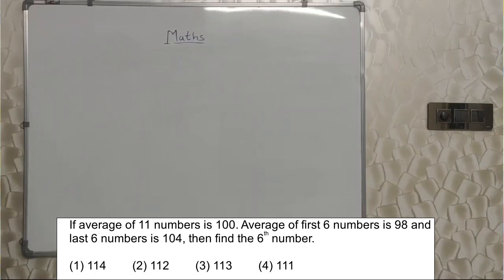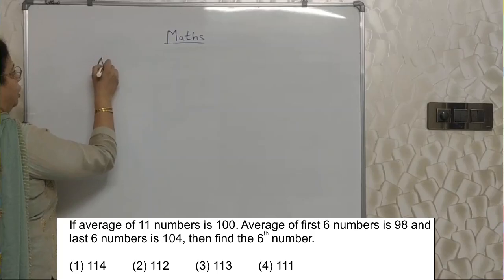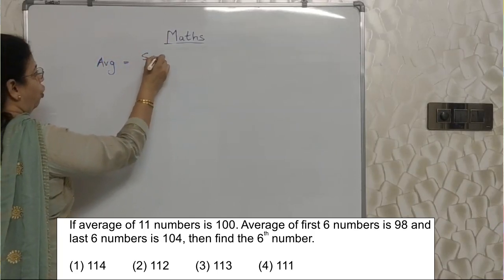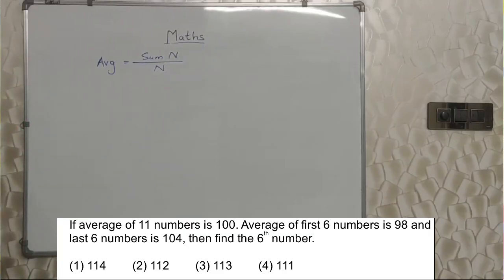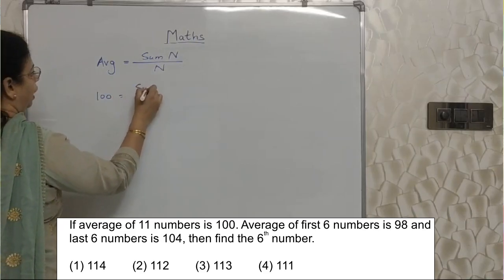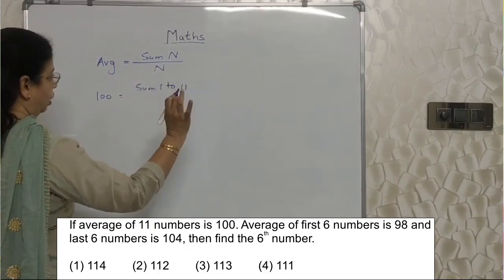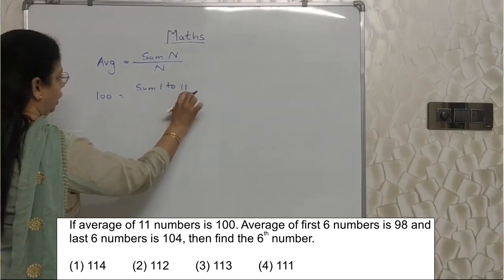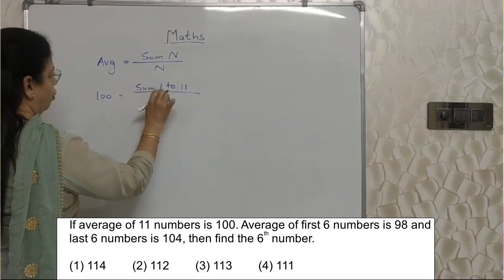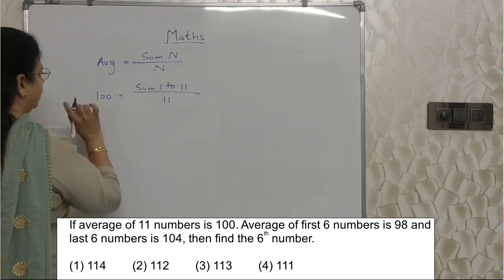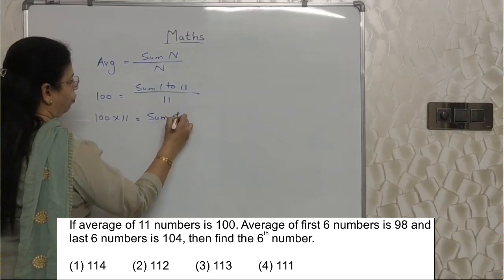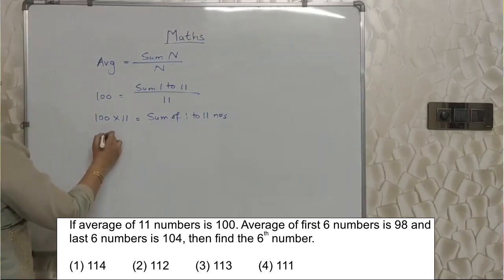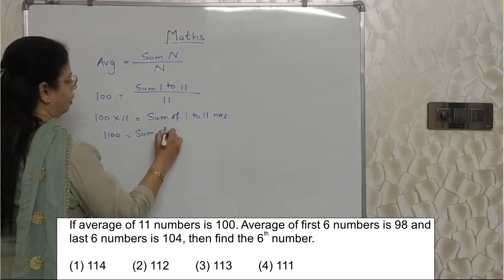Here the concept of average plays a very important role. The average of 11 numbers is 100. The formula of average is: average equals sum of all n terms upon n. So here, average is 100, and the sum of numbers 1 to 11 upon 11 equals 100. That means 100 into 11 equals 1100, which is the sum of the 1st to 11th numbers.